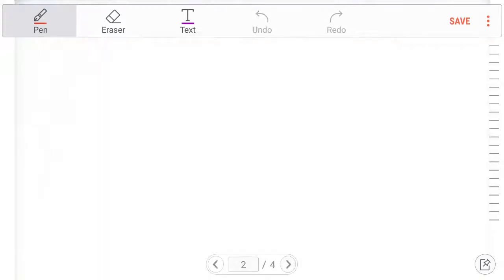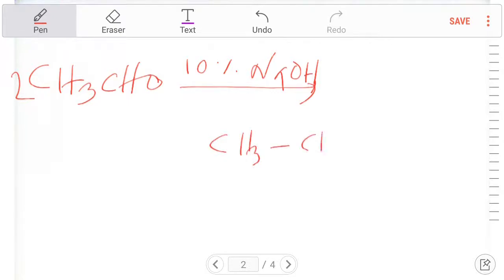Let's look at CH3CHO aldehyde. What do we do? There are two aldehyde molecules. We use 10% sodium hydroxide (NaOH). This is the aldehyde aldol reaction forming aldol acid.